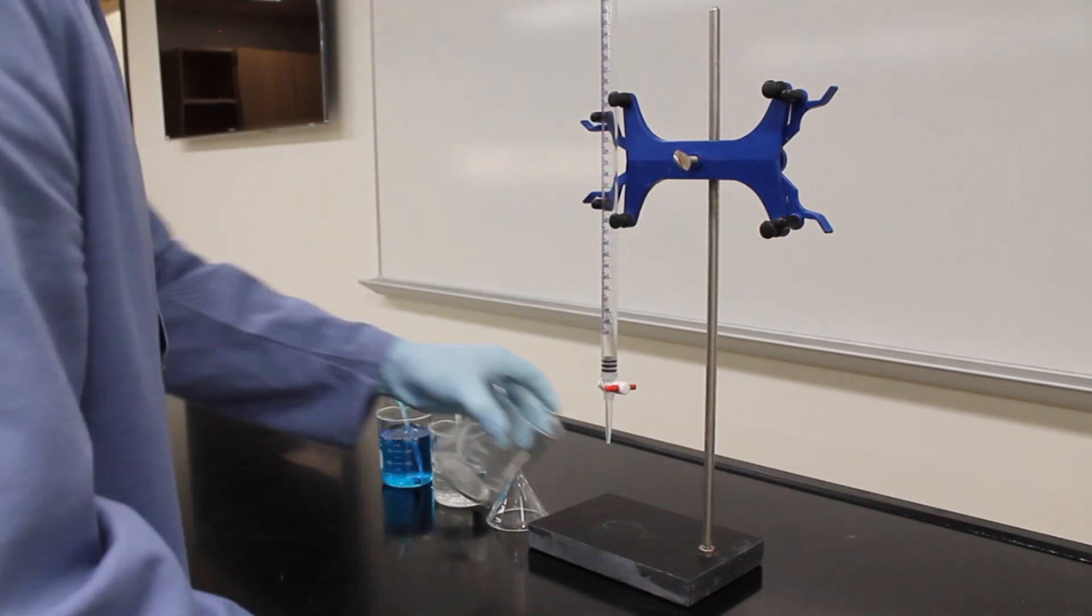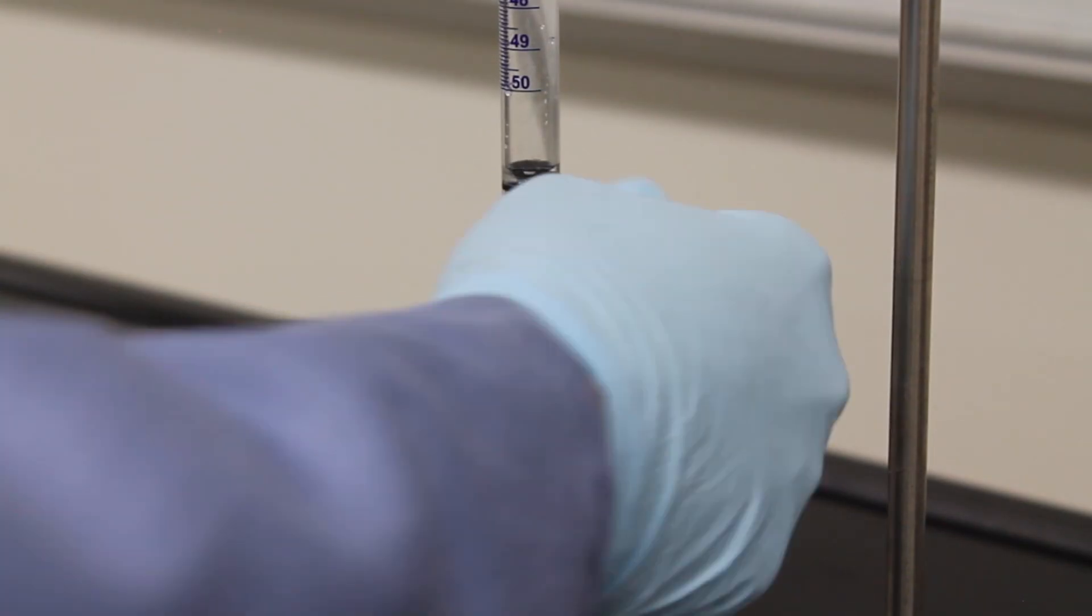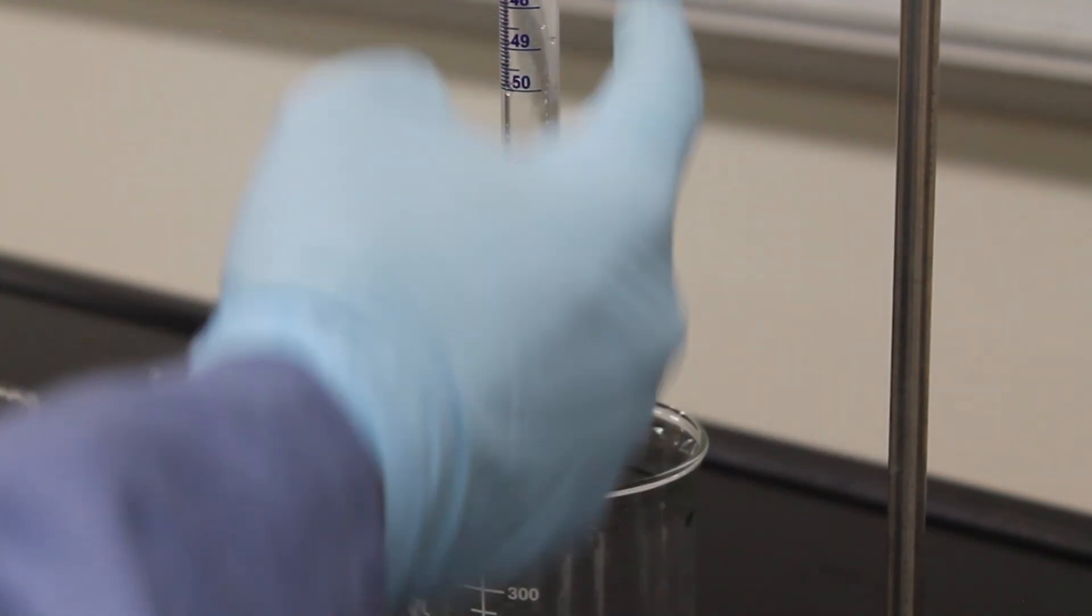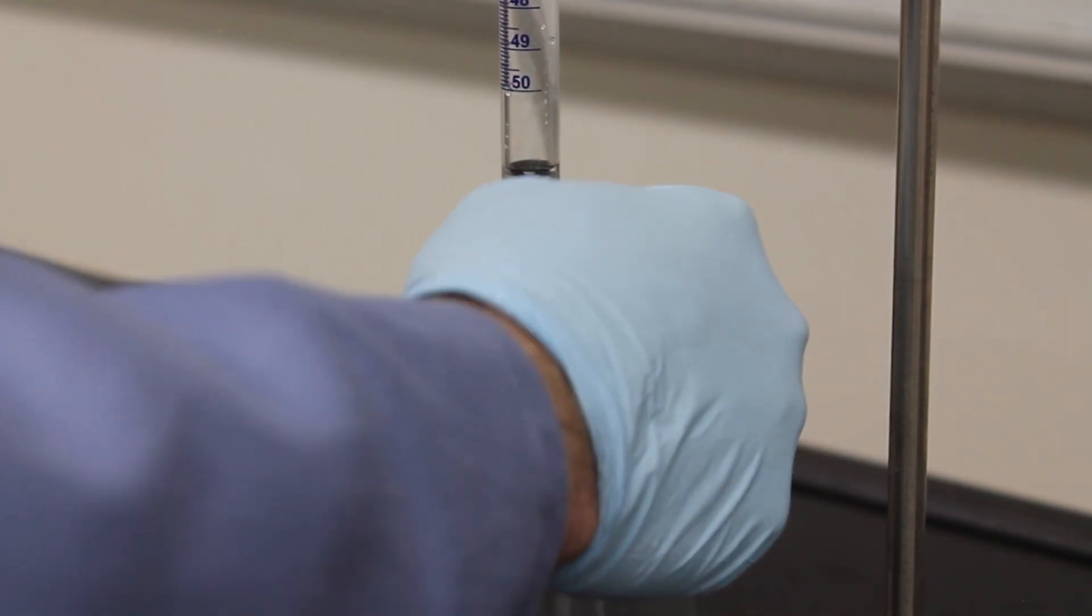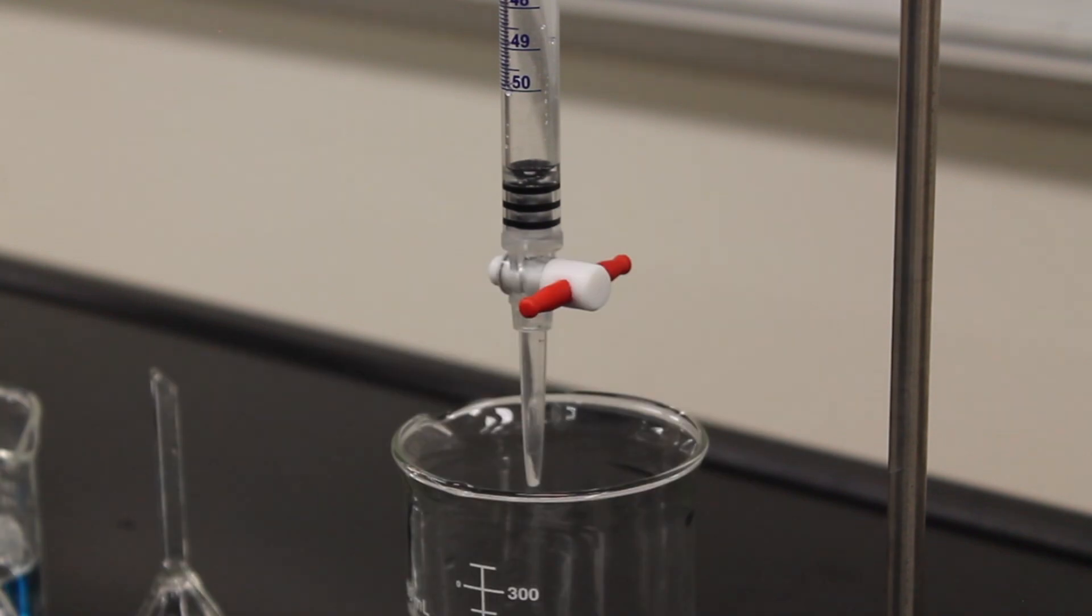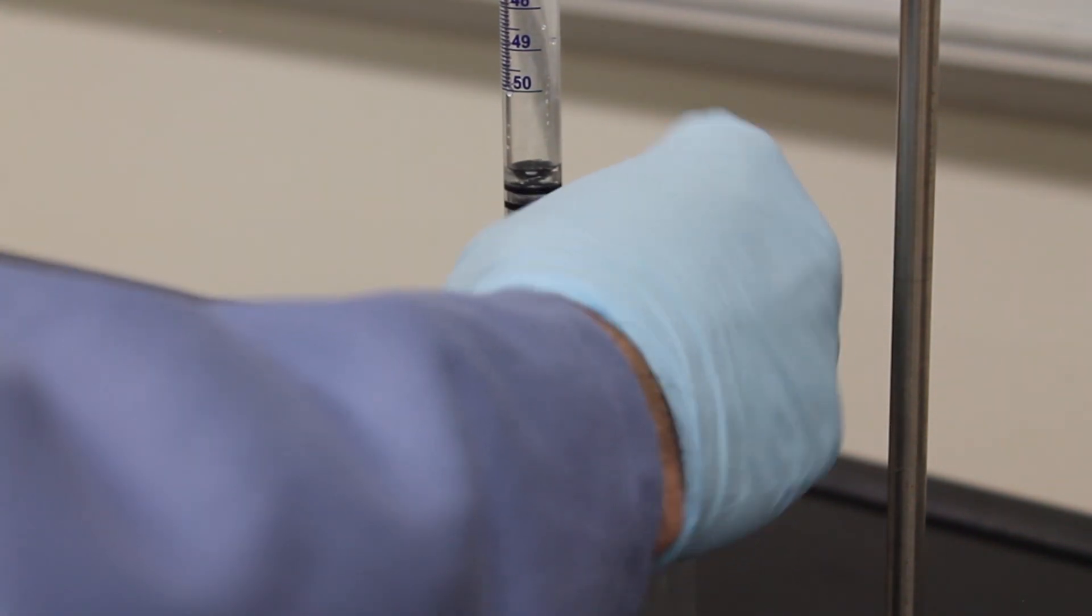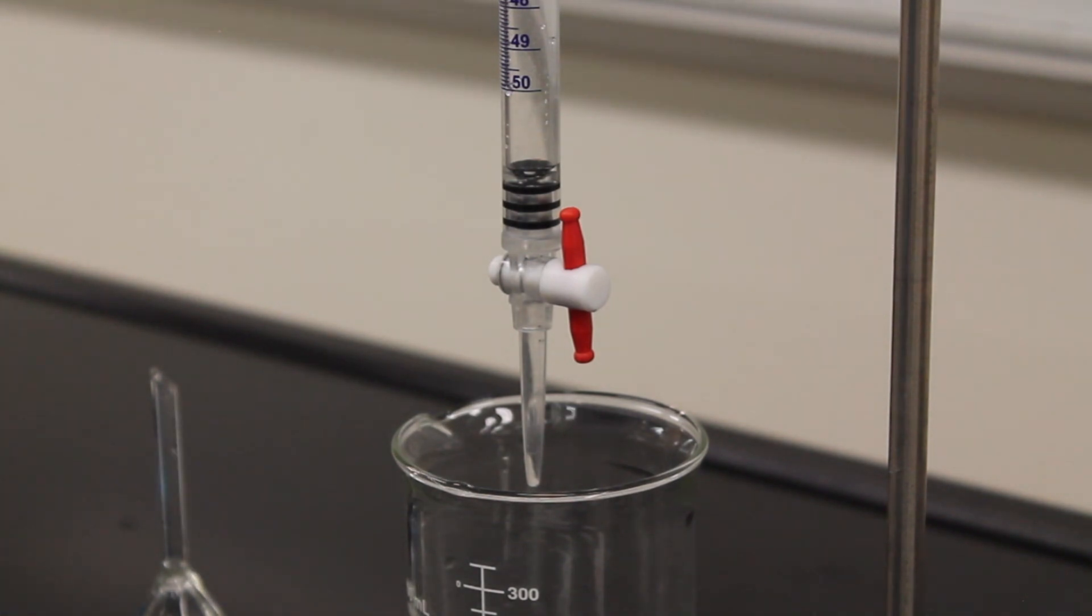Place your waste beaker under the tip of the burette. When the stopcock on the burette is turned in this direction it allows liquid to flow through. When the stopcock is in this position it stops the flow of liquid. For cleaning the burette we are going to leave it in the open position.